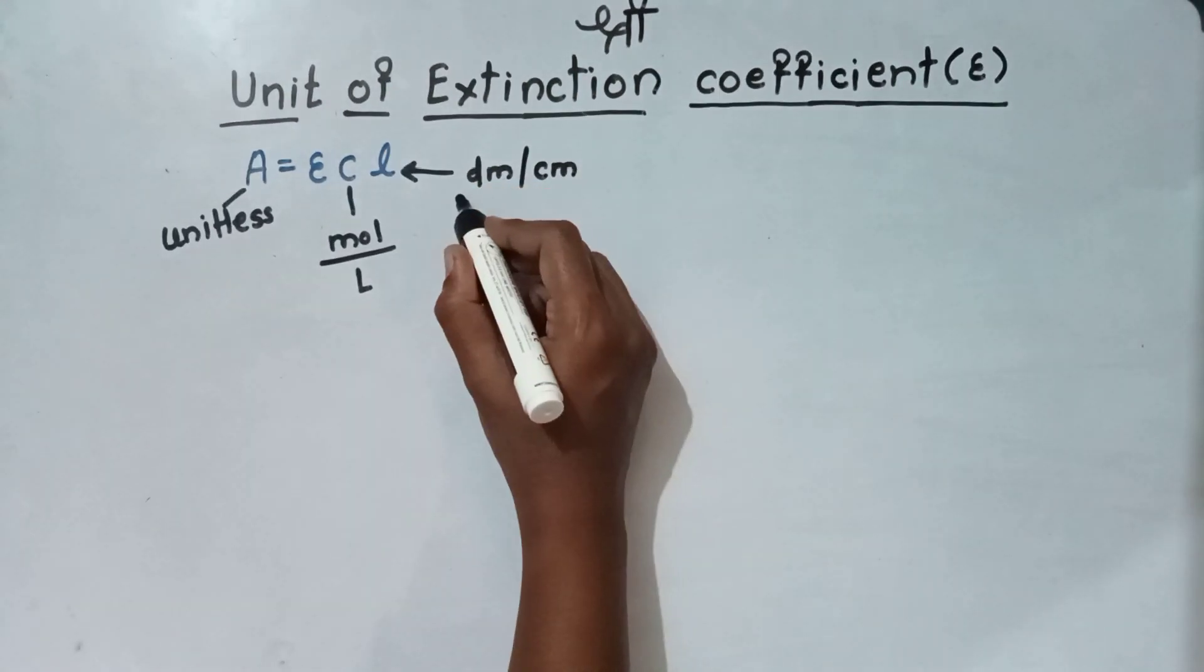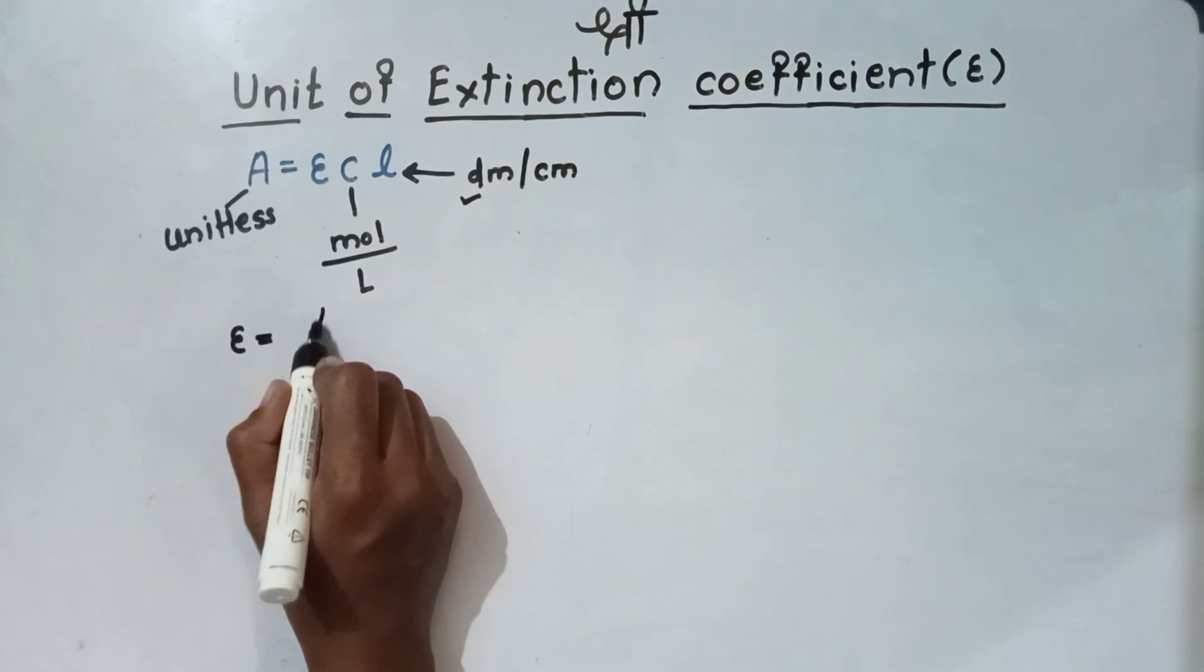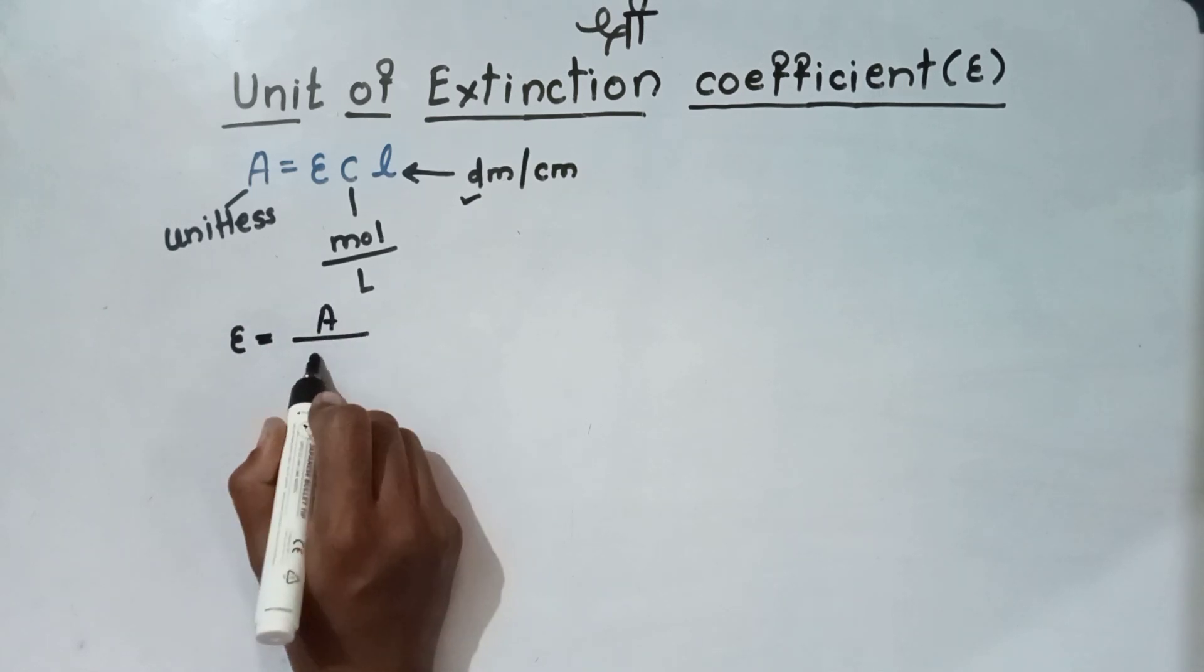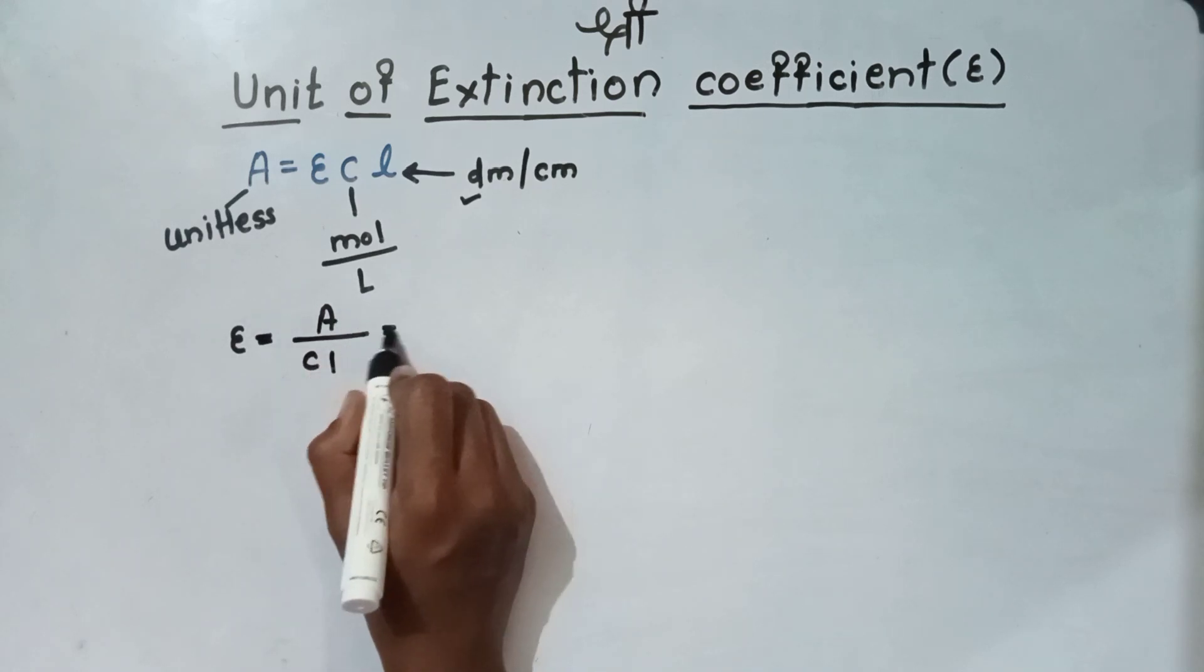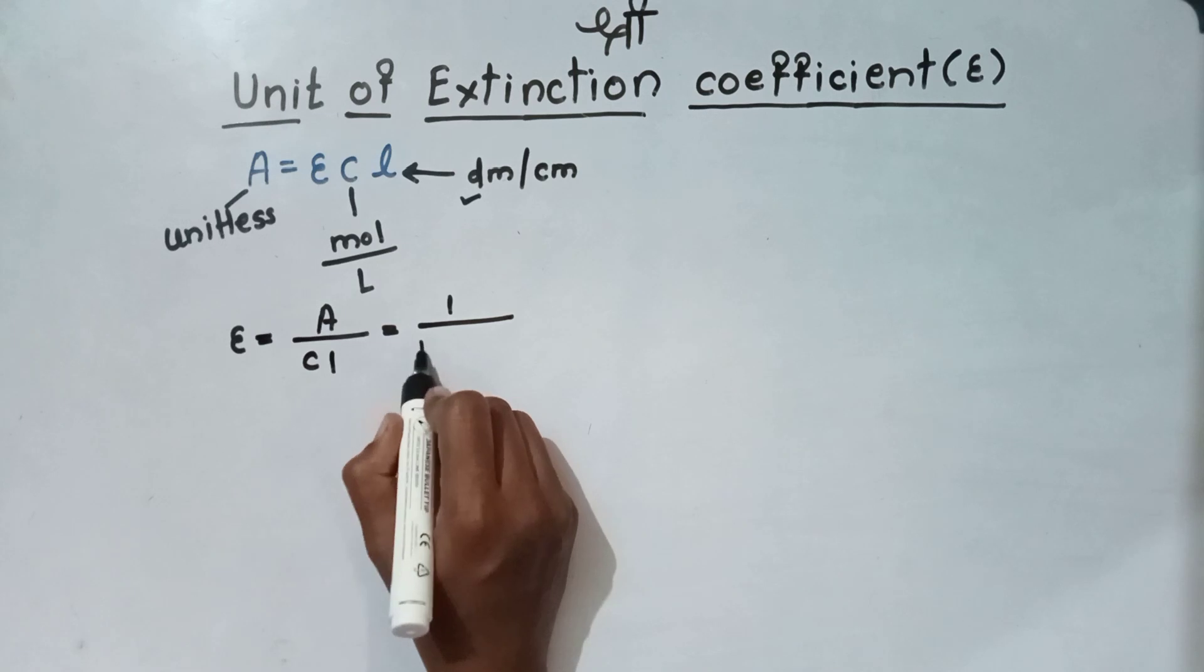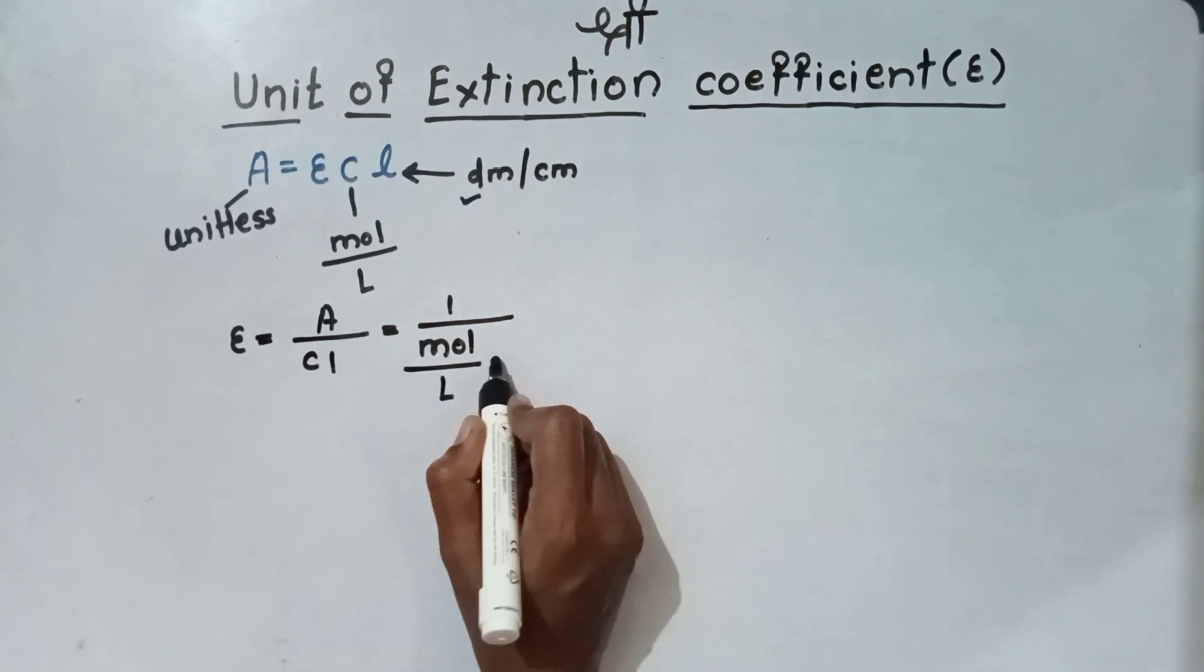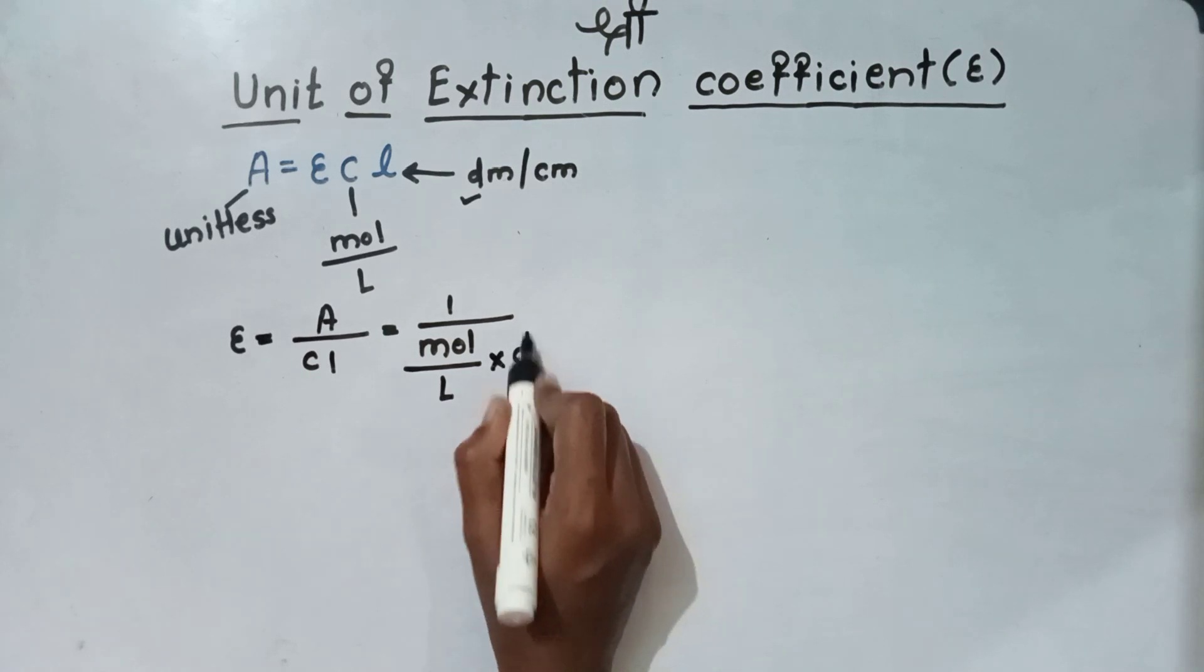We will see unit for the decimeter. Epsilon is equal to A by Cl. Since A is unitless, we will take it as 1. Concentration is in the form of mole per liter into length is in the form of decimeter.